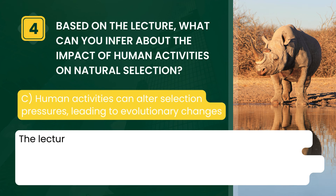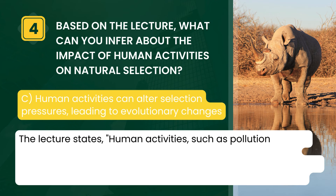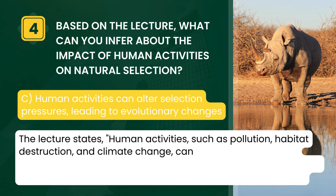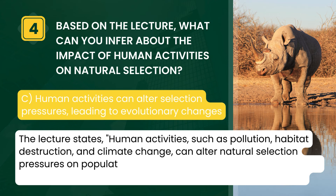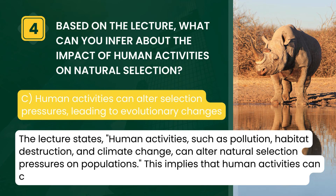The lecture states that human activities such as pollution, habitat destruction, and climate change can alter natural selection pressures on populations. This implies that human activities can change selection pressures, affecting evolutionary outcomes.